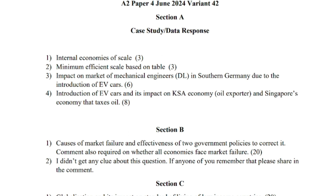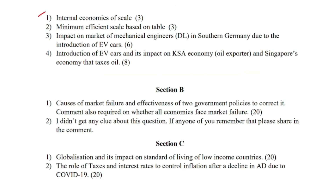These are just the hints I got from the students, and I'm going to discuss them so that you can verify your answers as well. These questions were tested in the case study section A of variant 4.2. I'll also share comments on variant 4.1, but for now I'm going to discuss only variant 4.2. In section B, the first question was about causes of market failure and effectiveness of two government policies to correct it, and you had to comment on whether all economies face market failure.